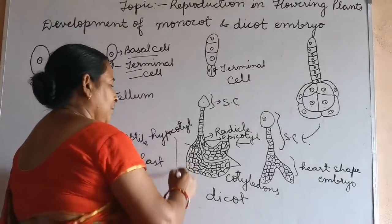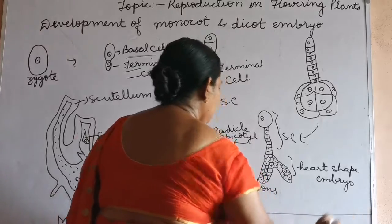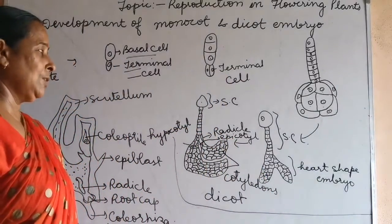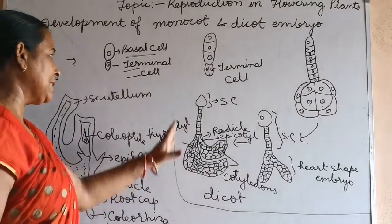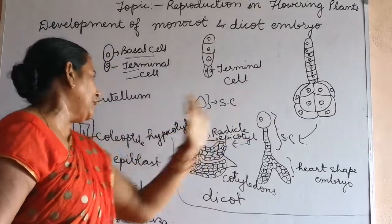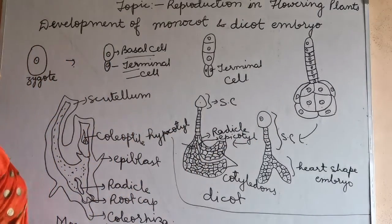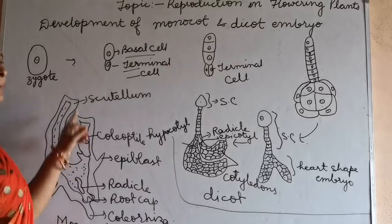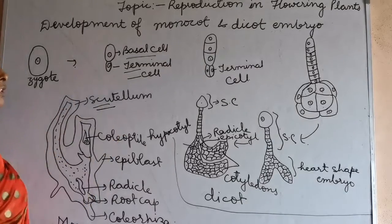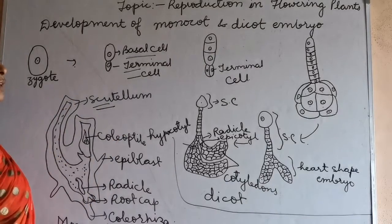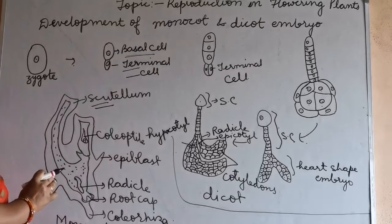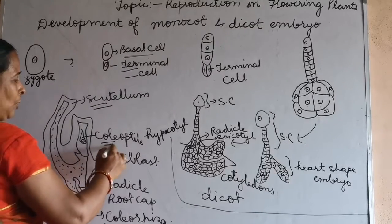After that you will get the hypocotyl, which is found under the soil and may develop into the root. This is the formation of zygote development in dicot. Whereas in monocot, the cell develops up to a structure named as the scutellum. This scutellum provides nutrition to the developing embryo, which may give rise to the coleoptile.